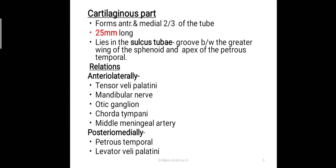The second part is the cartilaginous part, which forms the anterior and medial two-thirds of the tube, 25 mm in length. It lies in the sulcus tubae — a groove between the greater wing of the sphenoid and the apex of the petrous temporal bone. The anterolateral relations are: tensor veli palatini, mandibular nerve, otic ganglion, chorda tympani, and middle meningeal artery. The posteromedial relations are the petrous temporal bone and the levator veli palatini.